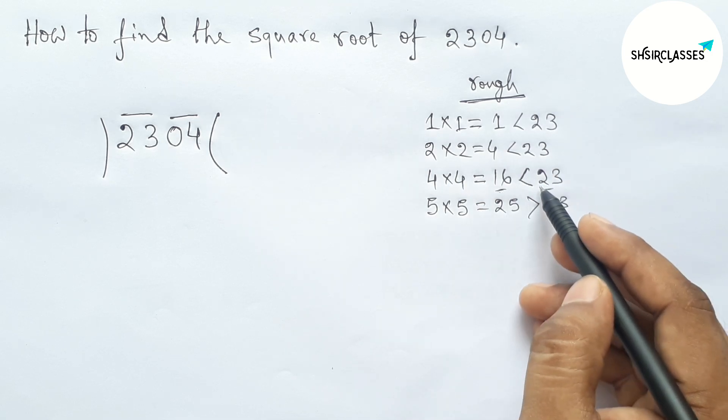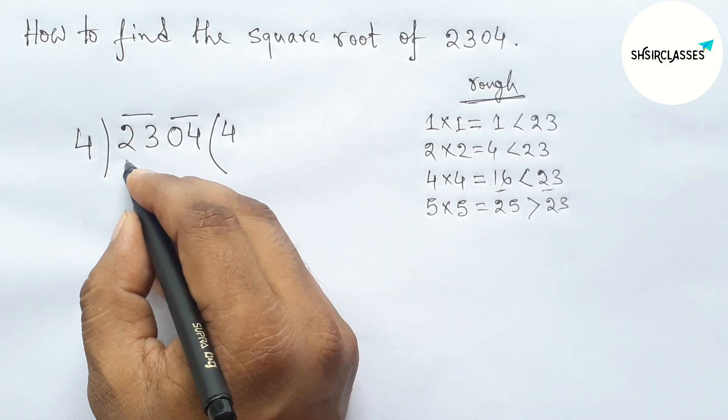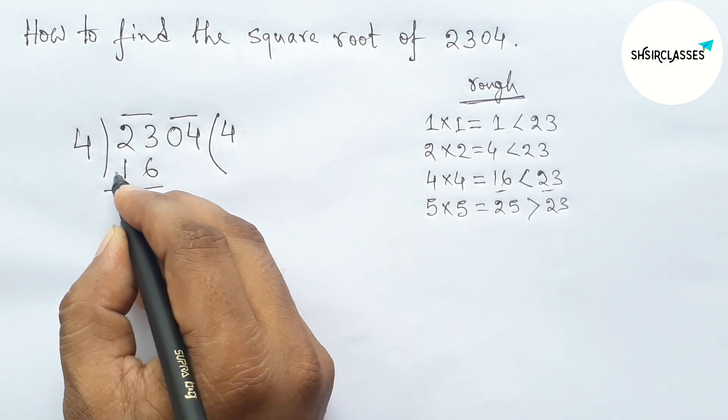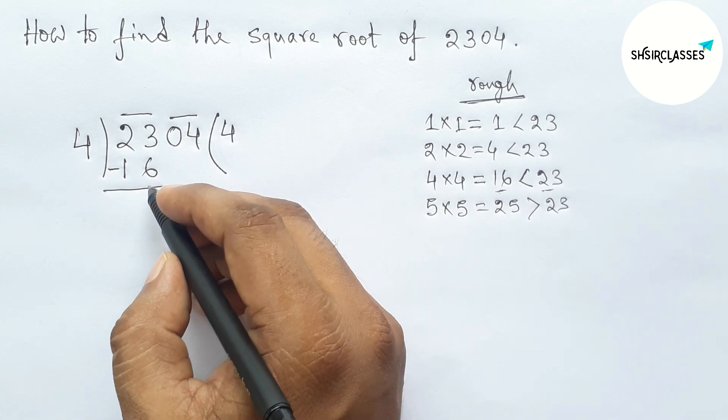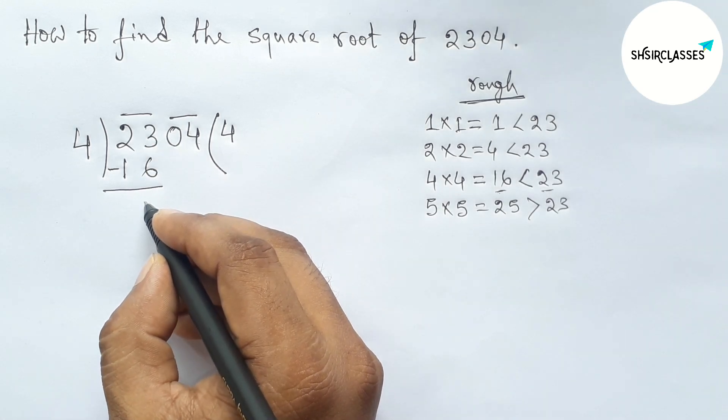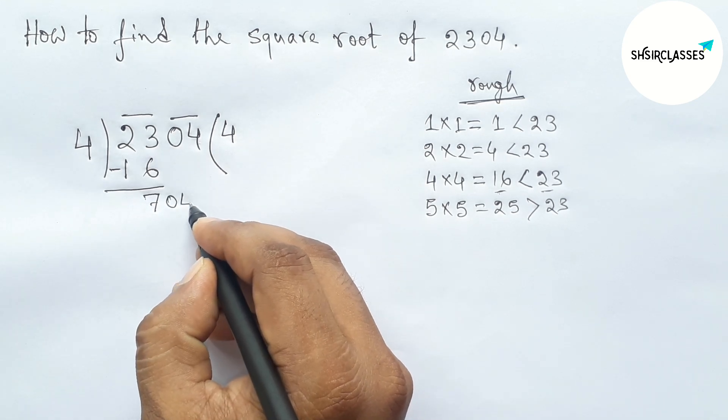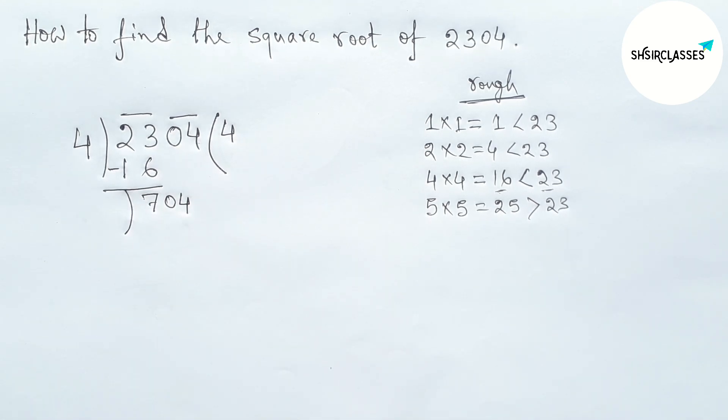Now checking by 5 times 5, so 25 greater than 23. So here this is more closer and less than 23. So we should take here 4 and 4 times 4 is 16. Next subtracting this, so here this is 7.